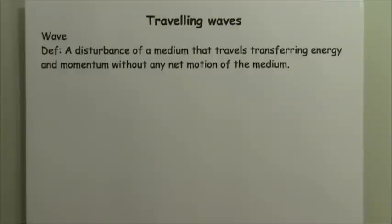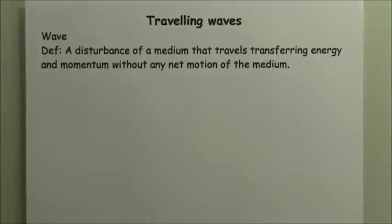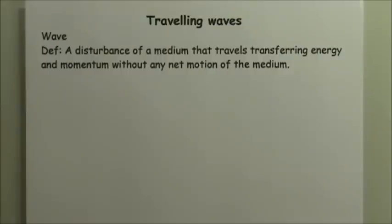The idea of a traveling wave is that when you have a material — referred to as the medium — that material might be a string, water, air, a slinky, or a spring. If any material you have is disturbed, that disturbance will begin to travel down the medium, traveling along any path it can along the medium.